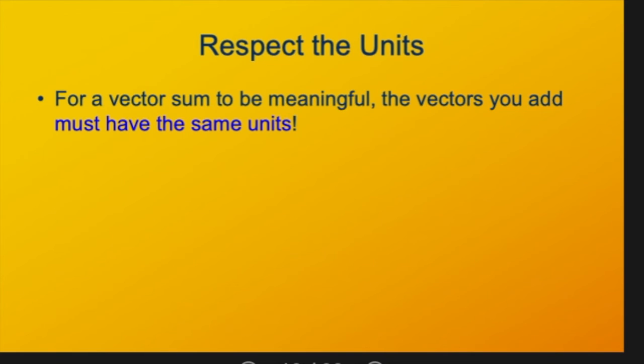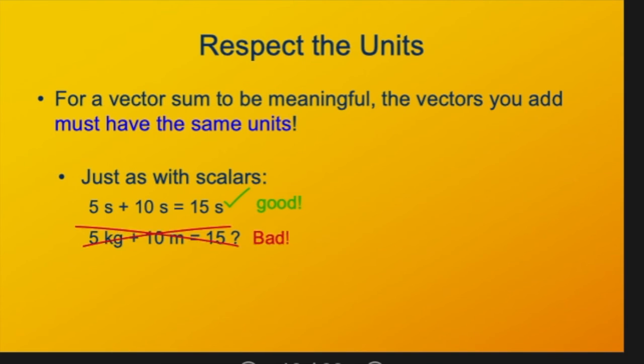Now you can't just add any vectors together. For a vector sum to be meaningful, the vectors have to be the same kind of quantity. They have to have the same units. So it's just like working with scalars. If you add 5 seconds and 10 seconds, you get 15 seconds. That's perfectly legit. But if you try to add 5 kilograms plus 10 meters, you can't say that's 15 anything, because kilograms and meters aren't the same thing. This is universal for algebra in general. 5A plus 10A gives you 15A. They've got a common factor of A. But if you have 5B plus 10C, that doesn't give you 15 anything.